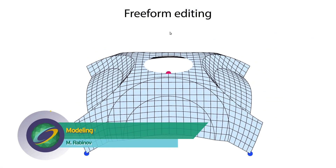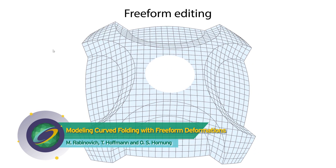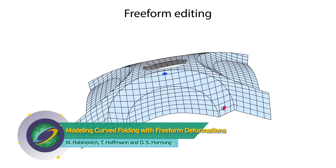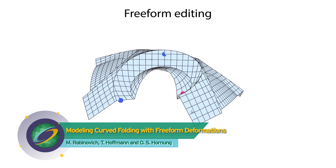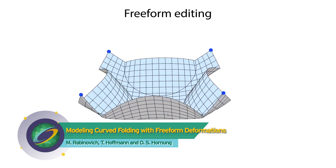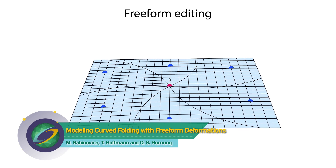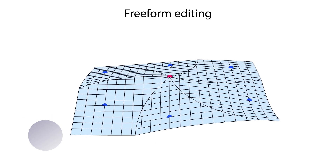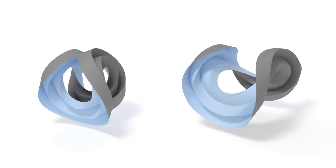Complex models can be made from paper by folding, as in origami, or bending the paper into a curved surface. In this work a framework is introduced for interactive design and exploration of curved folded surfaces. The algorithm allows a user to simultaneously fold creases and smoothly bend planar sheets.